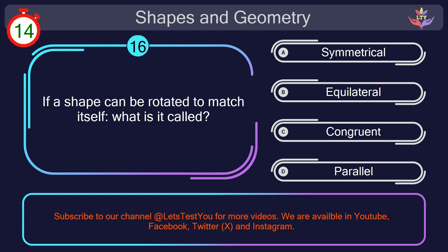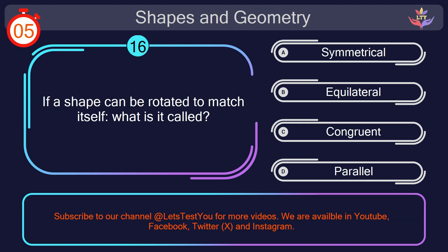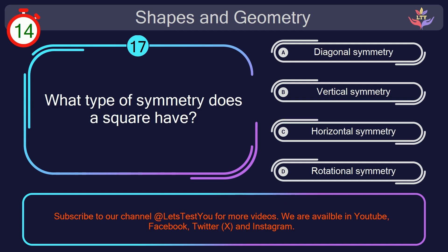Question number 16. If a shape can be rotated to match itself, what is it called? Your countdown started. 1, here we go. The correct answer is option C. Congruent. A shape that can be rotated to match itself is congruent.